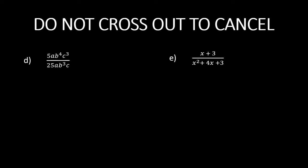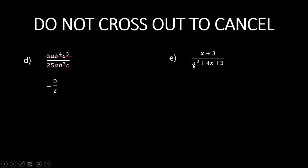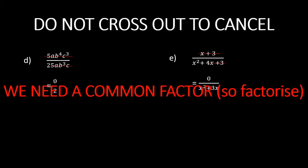Now be careful — do not cross out terms to cancel. A lot of people see a fraction like 5abc over 25abc and just cross out the 5abc on top and bottom, thinking that leaves nothing on top and 2 on the bottom. That is not right. Similarly, don't just cross out x plus 3 from the top of a fraction when you see x plus 3 in the denominator expression — that's subtracting, not dividing. We need to find a common factor to divide both top and bottom. We need to use our skills in factorizing quadratics to find what we can divide both the top and bottom by.